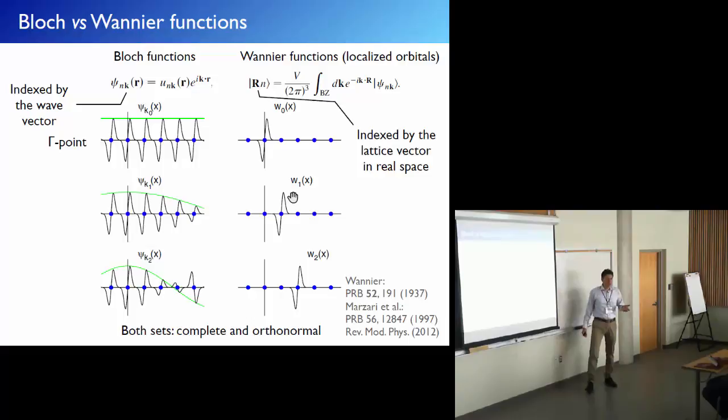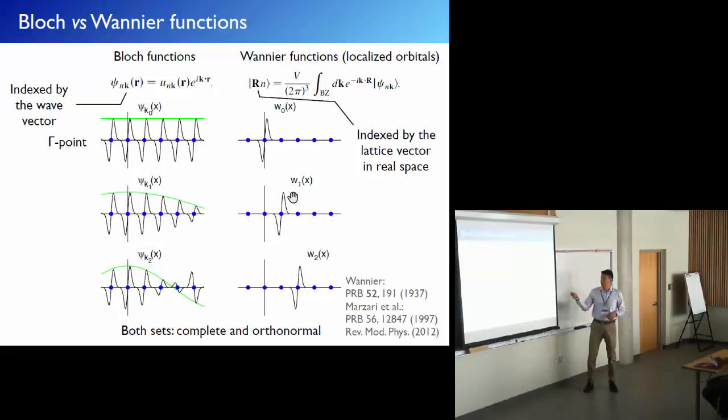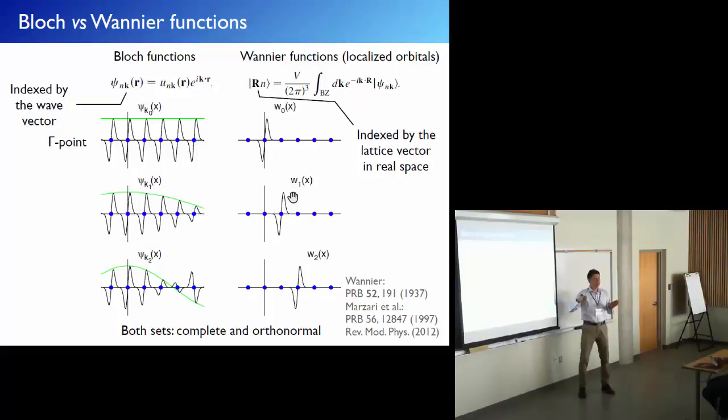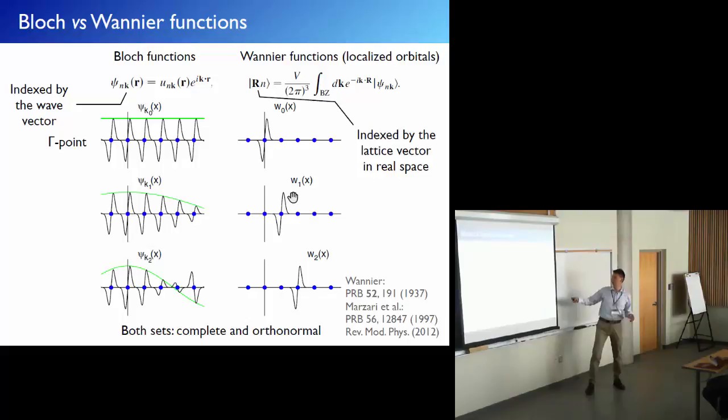The approach to Wannier functions is completely different. They are constructed with a localized basis in mind — the Wannier function is localized and not extended over space. They are indexed with the real lattice vector: zero refers to the home unit cell, one to the next neighboring unit cell, two to the second neighboring unit cell, and this works in 3D with three indices. This will be important when we analyze results of Wannier function calculations.